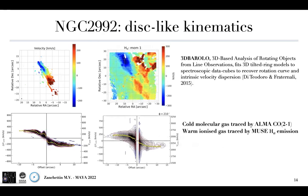Comparing the 3D-Barolo model applied also to our MUSE data, we find that the warm ionized gas clearly follows disc-like kinematics comparable and compatible with the molecular one, as deduced from the H-alpha emission. Here I show the moment one map for H-alpha and the position-velocity diagram along the kinematic major axis. The central region has been removed because of the presence of the broad-line region.